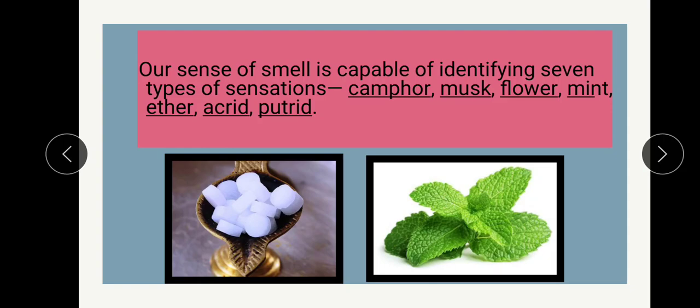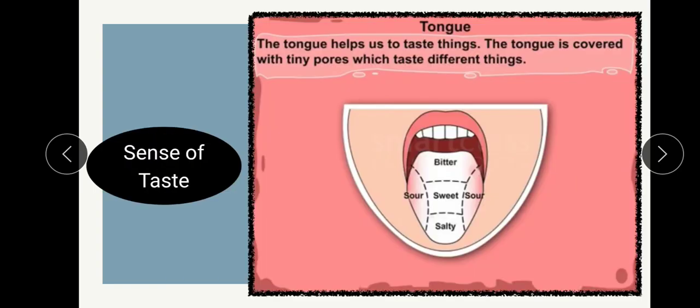These are the seven types of sensations that the sense organ nose is capable of identifying. Next, the sense of taste involves the sense organ tongue. The tongue helps us taste different things. The tongue is covered by tiny pores - which are like holes or taste parts. We identify different tastes like bitter, sour, sweet, and salty. These are called taste buds and they help us identify different tastes.